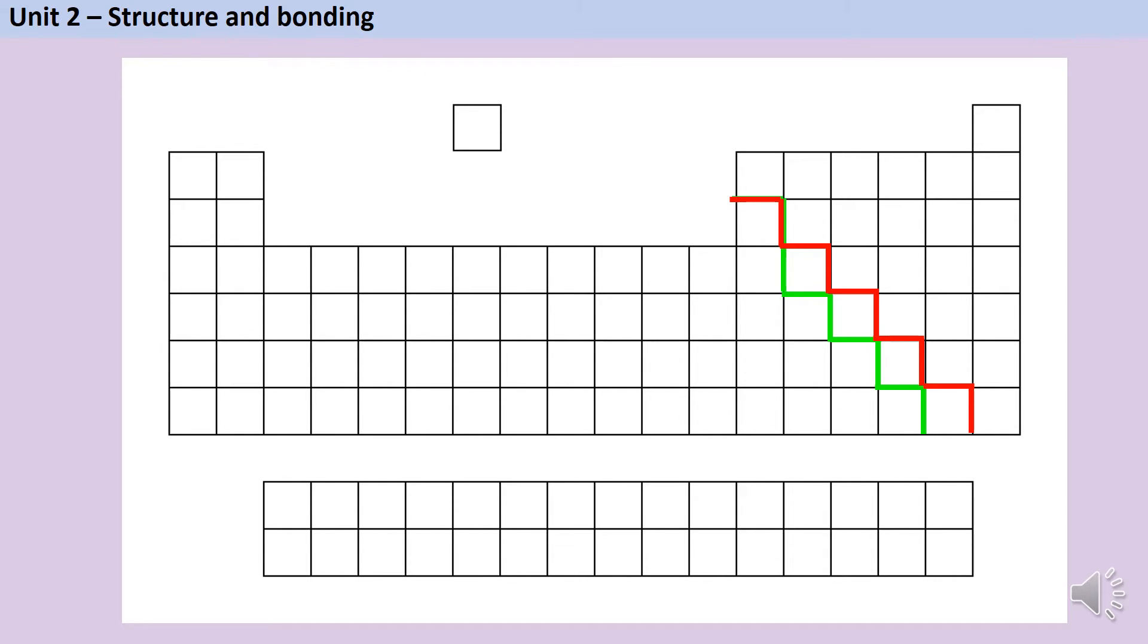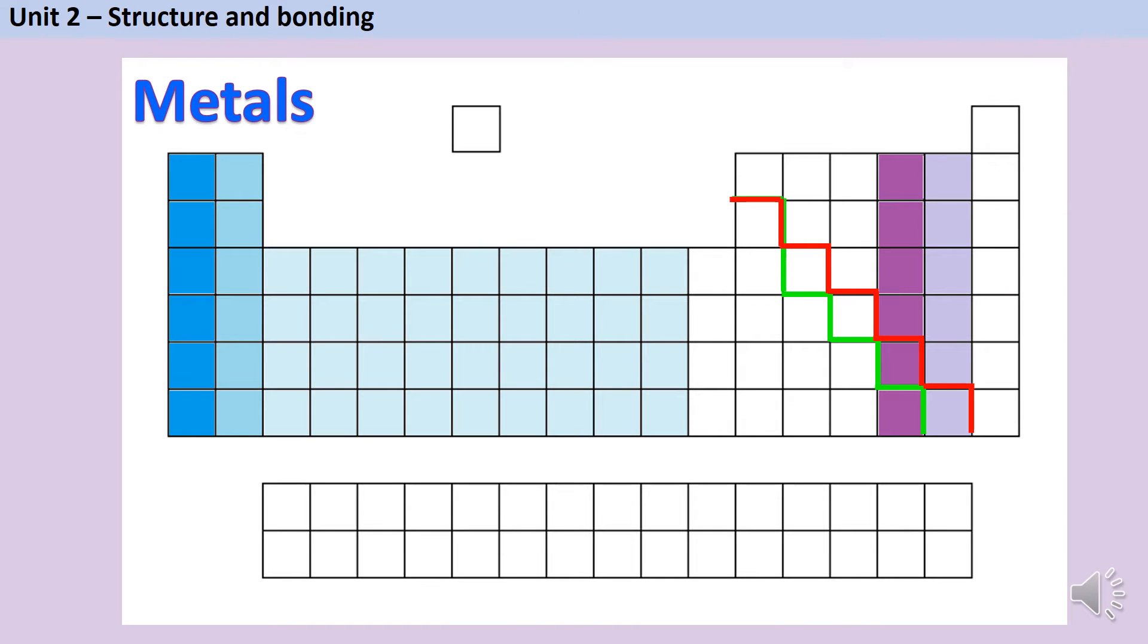However this doesn't really matter because as far as we're concerned for GCSE, the only metallic substances that we're interested in are the ones that are quite a long way away from the line, and so it doesn't matter where you've chosen to draw it. All of the substances that are coloured in blue form metallic bonds.